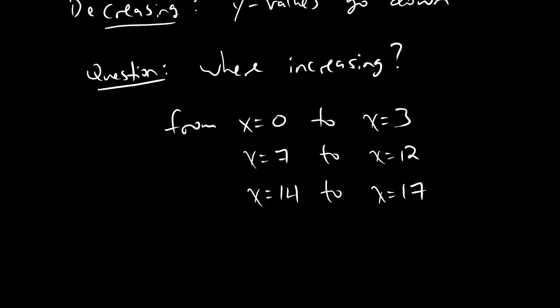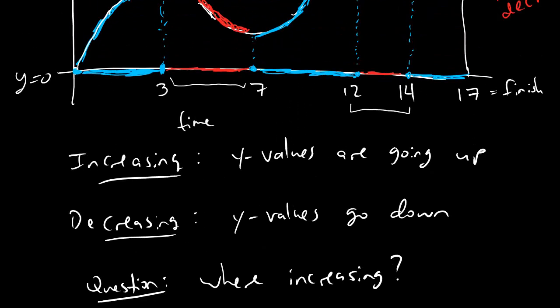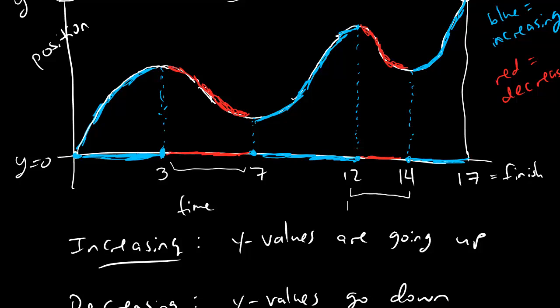So that's the idea behind increasing and decreasing. And that's pretty useful because that tells us if Pat, the speedy turtle, is actually going in the right direction or not. If Pat's position is increasing, that means he's headed in the right direction. And if position is decreasing, that means he's going backwards. And that means Pat's not getting any turtle food tonight.